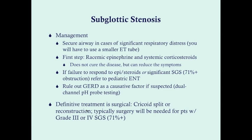Definitive treatment is surgical, performed at the ENT's discretion. Surgery is generally indicated for grade 3 or 4 stenosis or significant issues such as impaired growth or severe respiratory distress. Options include a cricoid split to expand the tracheal area or reconstruction. You don't need to know the details of these procedures — just know that definitive treatment is surgical, and that the majority of children will grow out of the condition, similar to laryngomalacia.